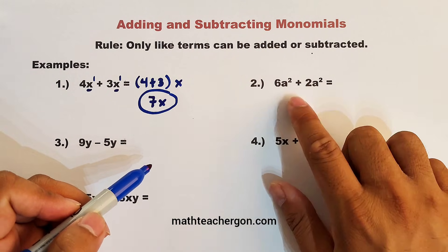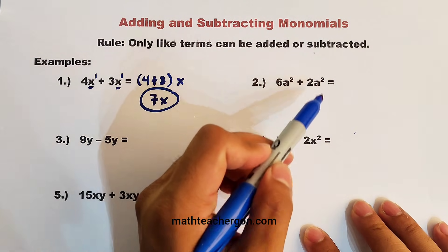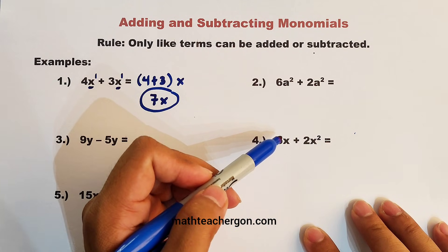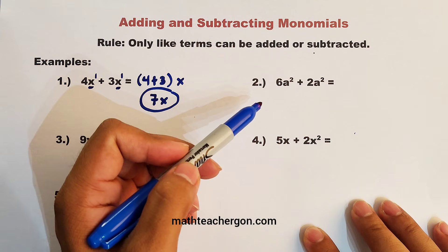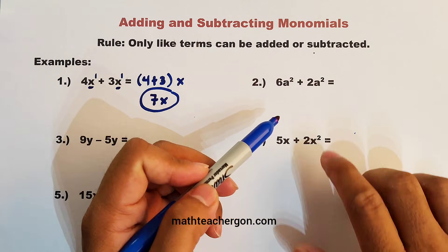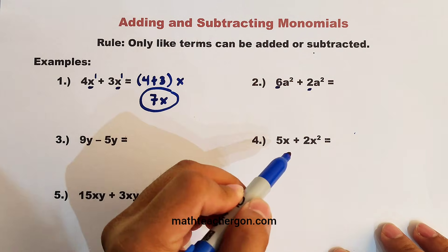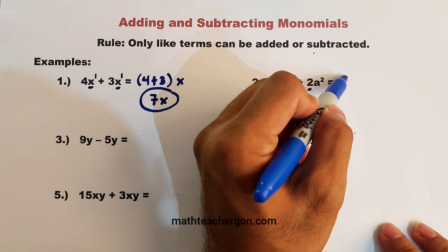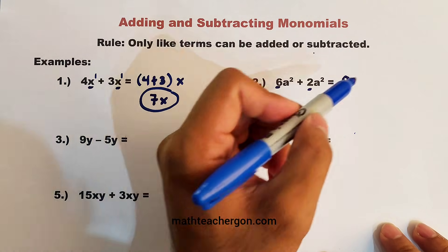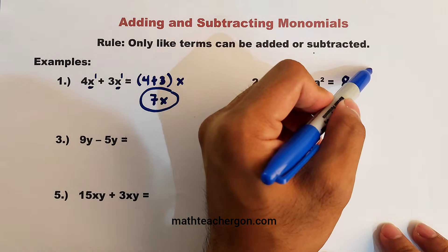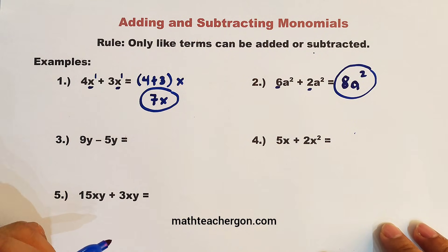Let's continue with item number two. In number two, we are given 6a squared plus 2a squared. So look at the variable. They have the same variable a with the coefficient that is 2. So are they like terms? Yes. So what we need to do is to add the coefficients, 6 plus 2, that is 8. Then copy the variable and exponent, which is a and then square. And this is now the correct answer. As simple as that.